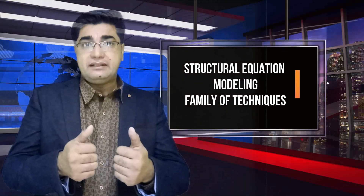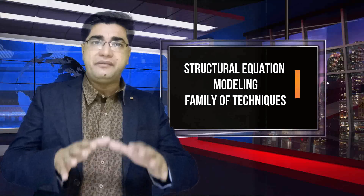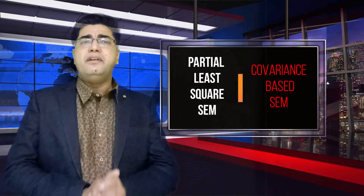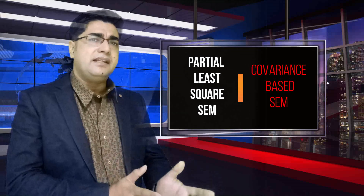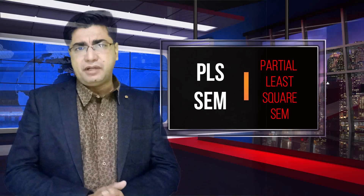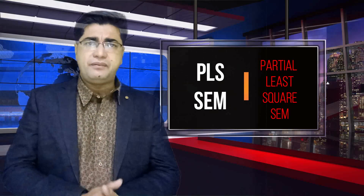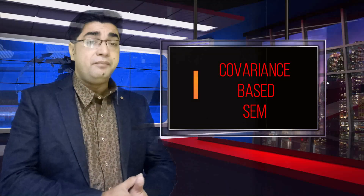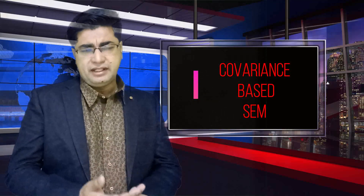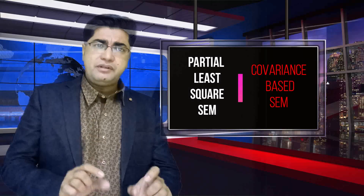Structural equation modeling is a family of techniques which has primarily two branches. One is the partial least square SEM, called PLS-SEM or component-based SEM. The other is covariance-based SEM, which we normally just call SEM. PLS-SEM is applied primarily through the SmartPLS software, which is the flagship software for this technique, whereas covariance-based SEM is applied through AMOS, or other software like LISREL or EQS.